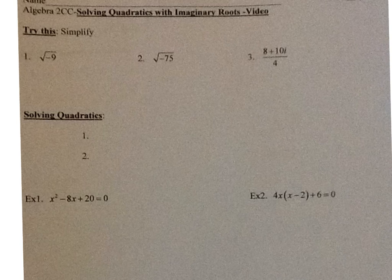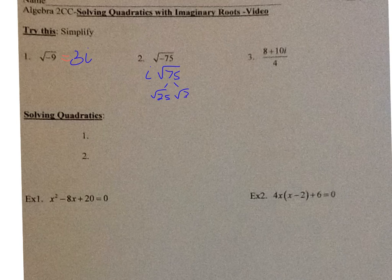We have the square root of negative 9. The square root of 9 is 3, and the negative becomes an i, so that's 3i. Then we have the square root of negative 75. The negative becomes an i, and the square root of 75 breaks into the square root of 25 times the square root of 3, so that's 5i√3.